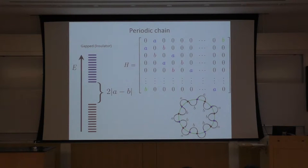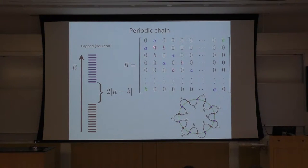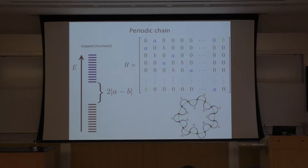On the diagonal we have zero — let's say the chemical potential is zero. And we have A, B, A, B because site one can hop to site two with amplitude B, and site two can hop to site three with amplitude A. We put B at the corner entries because we have a periodic chain. The system can be easily solved — for example, you can use Fourier transform and obtain the energy spectrum. The energy spectrum in this case has a non-zero gap which is proportional to the absolute value of A minus B.